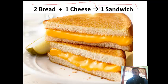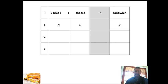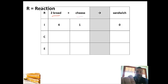Now we're ready to put this into what we call a RICE table. The RICE table looks like this — it's a grid. First, let's explain what the R, the I, the C, and the E are. The R stands for reaction, and at the top you write the reaction, which is two bread plus one cheese equals one sandwich.